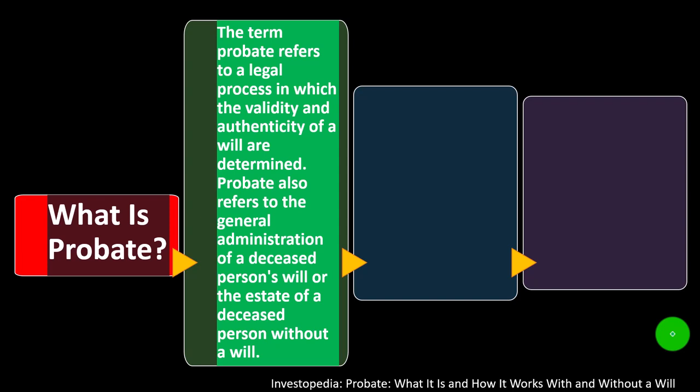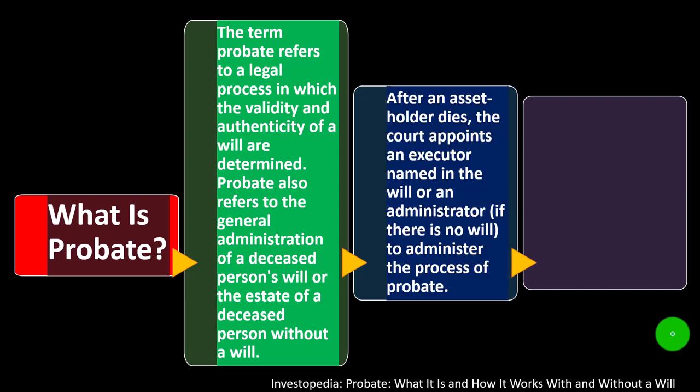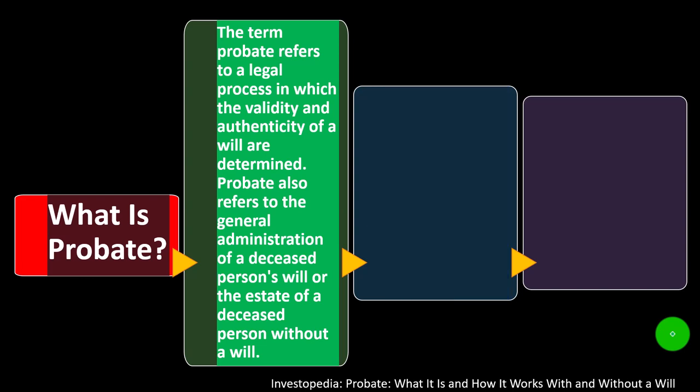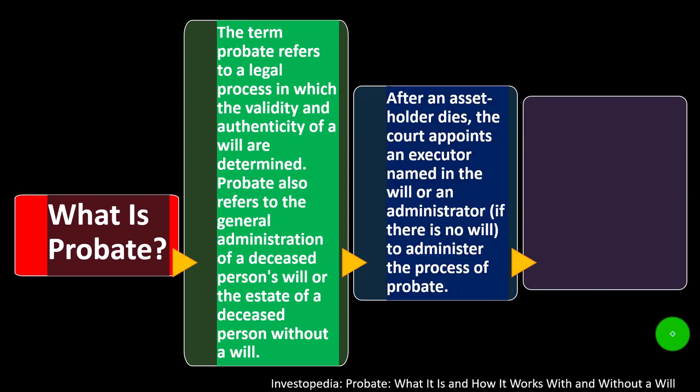The term probate refers to a legal process in which the validity and authenticity of a will are determined. Probate also refers to the general administration of a deceased person's will, or the estate of a deceased person without a will. The will is not a separate legal entity like a trust; it takes effect at the point of death. After an asset holder dies, the court appoints an executor named in the will, or an administrator if there is no will, to administer the process of probate.